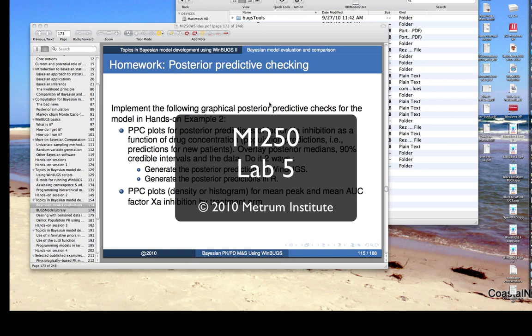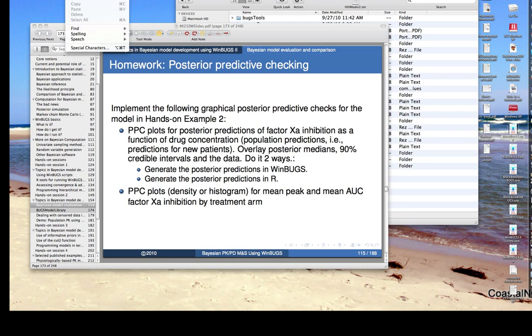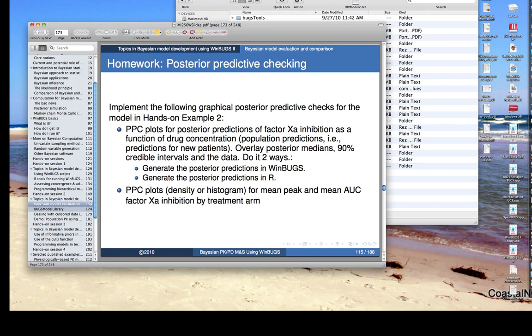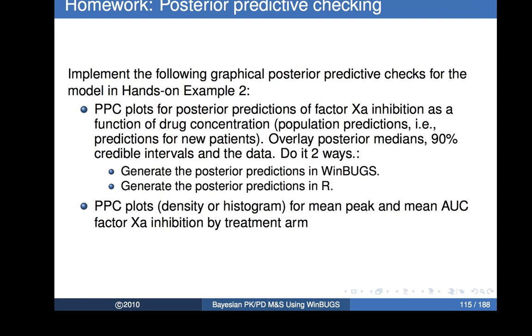This week's assignment is a follow-up on the discussion we had during the last lecture about posterior predictive checks. In particular, I assigned doing a few graphical posterior predictive checks based upon the hands-on example number two. The first one is actually doing one particular type of posterior predictive check two different ways, so you can get experience doing it both ways. We talked briefly about the potential advantages or disadvantages of one versus the other.